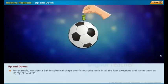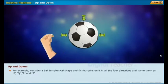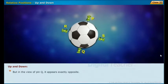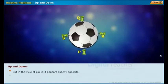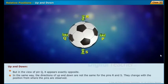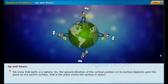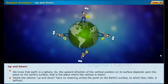Consider a ball in spherical shape with four pins fixed in all four directions, named P, Q, R, and S. In P's point of view, pin P appears up and pin Q appears down, but in the view of pin Q, it appears exactly opposite. The directions of pins R and S also change with the position from where they are observed. Since Earth is a sphere, the upward direction on its surface depends upon the place on Earth's surface, so the notions 'up' and 'down' have no meaning unless the reference point is defined.